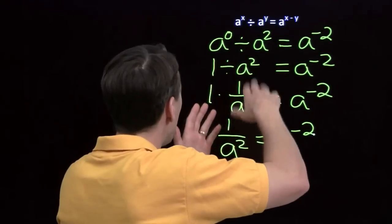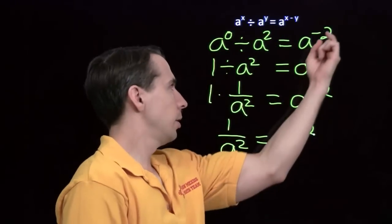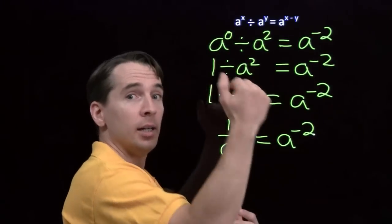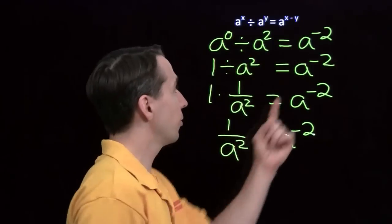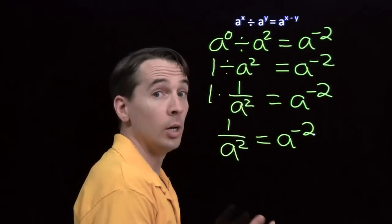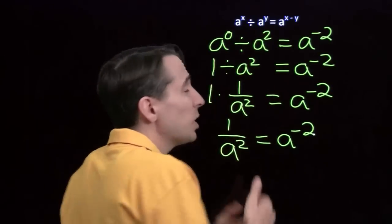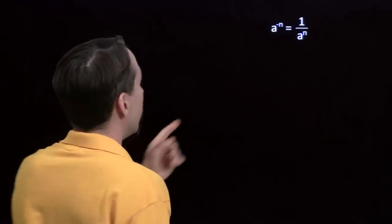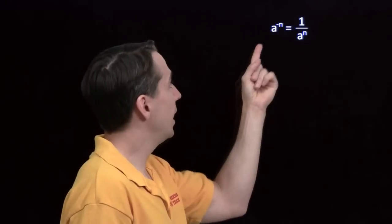If you look closely at all these steps, you'll see that we can replace all the 2s with 3s, which will replace all the negative 2s with negative 3s, and we'll see that a to the negative 3 is the reciprocal of a cubed. Similarly, replacing the 2s with 4s shows a to the minus 4 is the reciprocal of a to the 4th. We can replace the 2s with any positive integer, and we see why we define raising a number to a negative exponent this way: a to the minus n is just the reciprocal of a to the n.